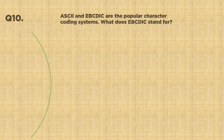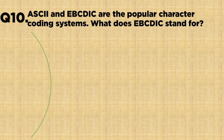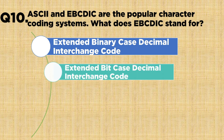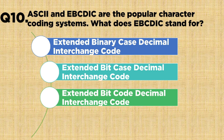Question number 10: ASCII and EBCDIC are popular character coding systems. What does EBCDIC stand for? Option A: Extended binary case decimal interchange code, Option B: Extended bit case decimal interchange code, Option C: Extended bit code decimal interchange code, Option D: Extended binary coded decimal interchange code. The correct answer is Option D: Extended binary coded decimal interchange code.